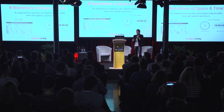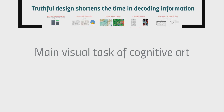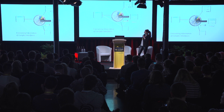To sum up the methodology: if we pick the right visualization and a truthful design, it shortens the time of decoding information — understanding what it's about. The visual task is to create contrast, comparison, and choice, which will ultimately help users make fast and correct decisions. Now let's move to a quick excursion on interactivity, because it's a real game changer.